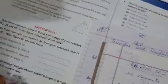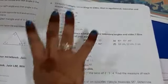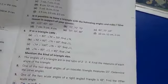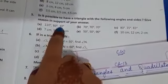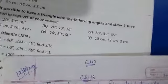We have done till Question 4 in the last video. Now I will start with Question 5 of Exercise 13A: 'Is it possible to have a triangle with the following angles and sides?' When angles are given, the property to check is that their sum should be 180°. Add all three angles — if they sum to 180, it will be a triangle; otherwise it will not.